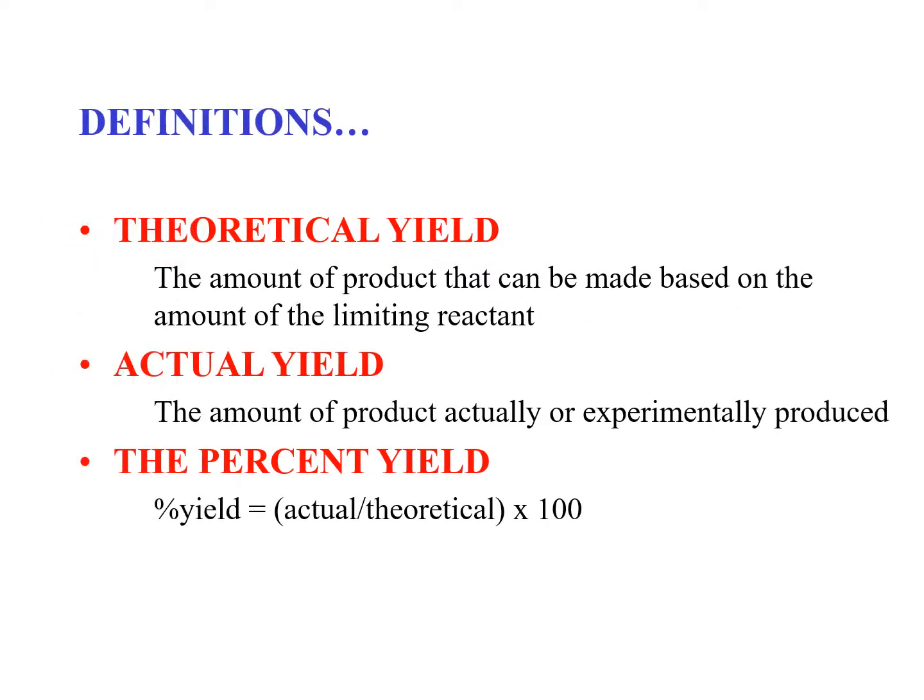Further definitions. Theoretical yield. The amount of product that can be made based on the amount of limiting reactant. And the actual yield is what you obtain experimentally. And the percent yield is actual yield over theoretical yield times 100.